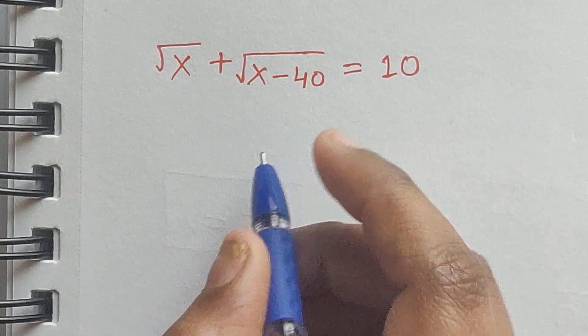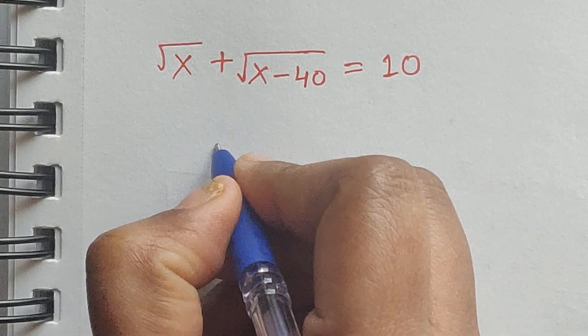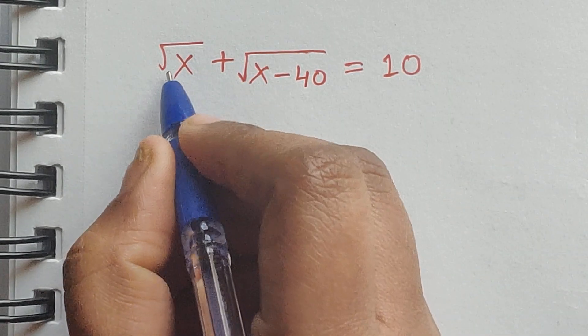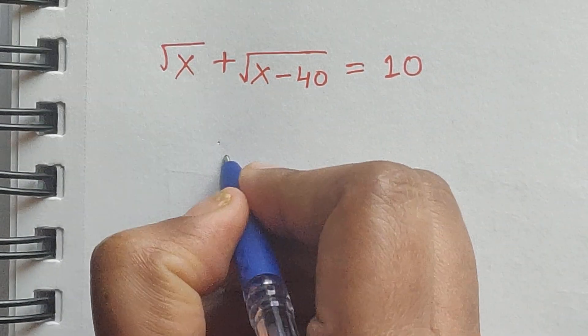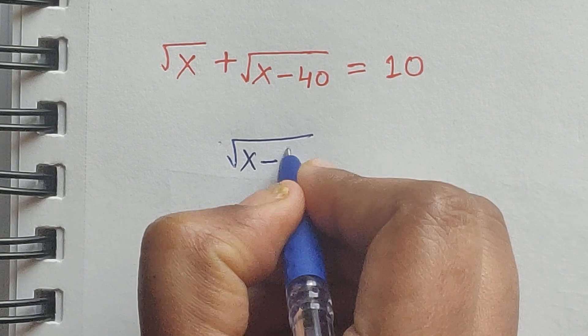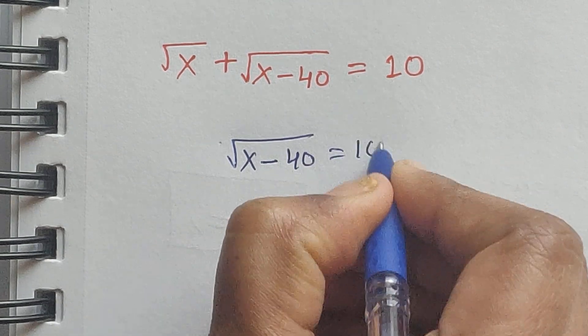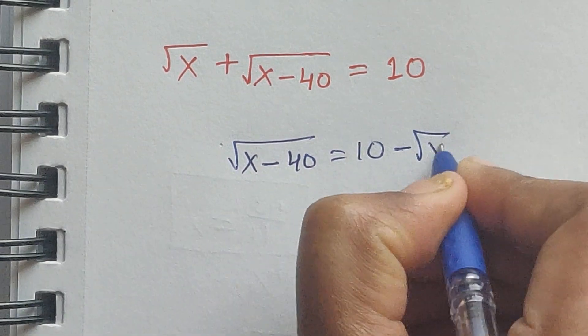So how do we solve this? Let's see. First I am writing this square root of x to the right side: square root of x minus 40 equal to 10 minus square root of x.